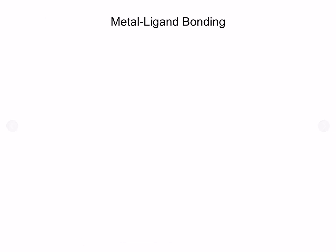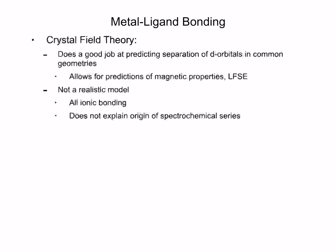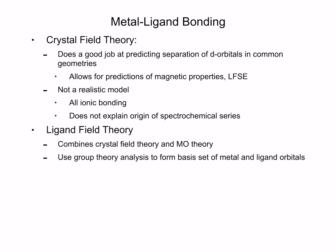A little bit about metal-ligand bonding. When we think about how a ligand binds in metal, we understand that crystal field theory does a good job at predicting the separation of d-orbitals in common geometries. From that, we can predict magnetic properties and we can understand things like the ligand field stabilization energy.